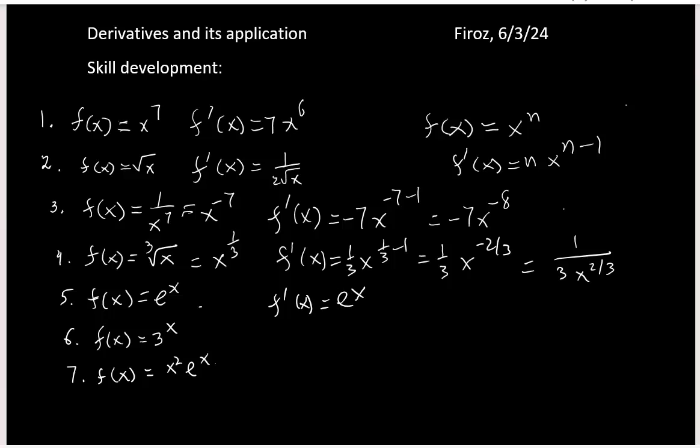For this one next, 3 to the x, that tells you f prime x equals, if you remember the formula, it has 3 to the x natural log of 3. You are following this formula: f(x) is a to the x, so then f prime x gives you a to the x natural log of a.